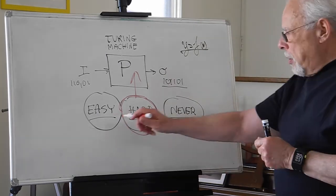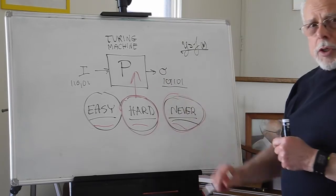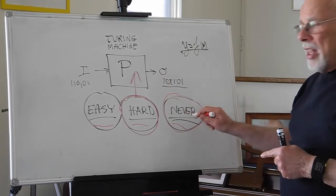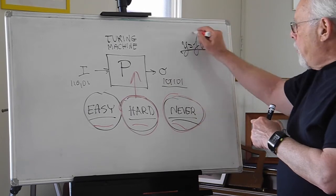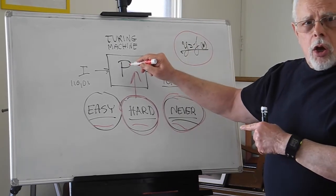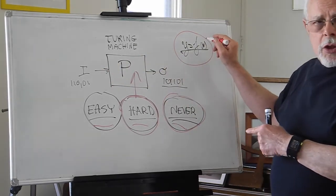From these three categories, let's first start with the most intriguing one, the Never. Meaning a category that says that there are functions for which we cannot build a machine that would be equivalent to.